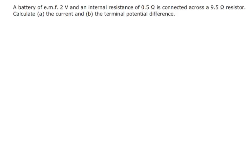A battery of EMF 2 volts and internal resistance 0.5 ohms is connected across a 9.5 ohm resistor. Calculate the current and the terminal potential difference.